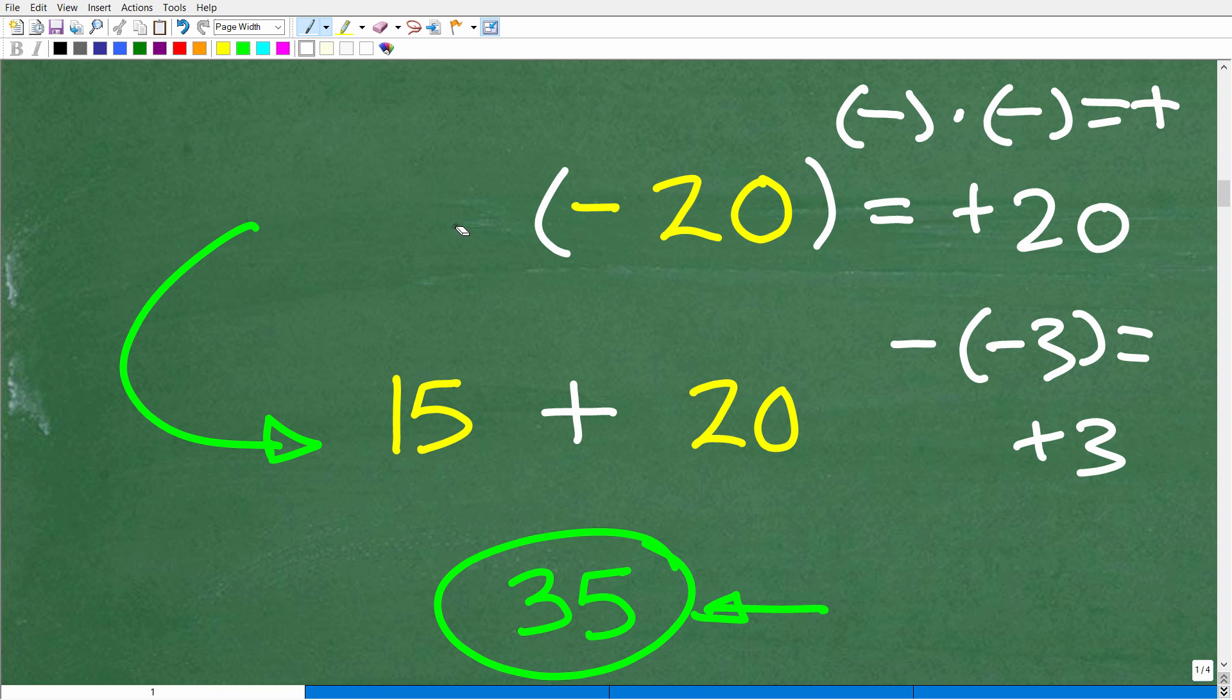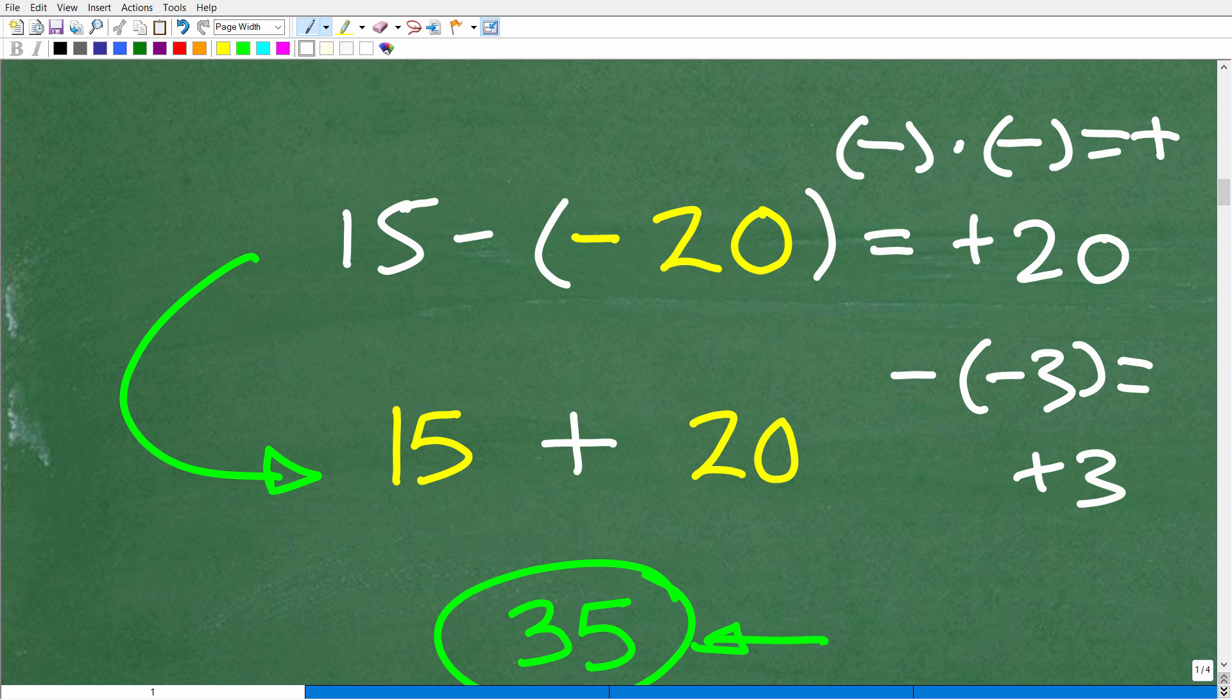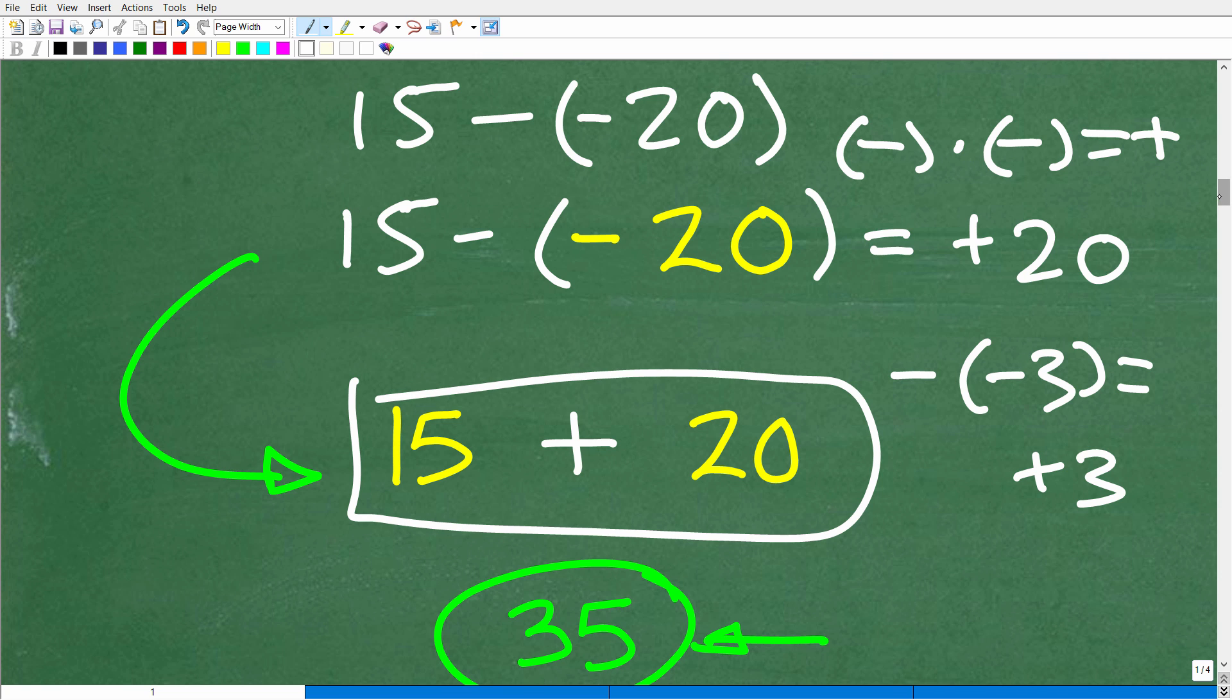So, again, let's go back to our problem. So we have 15 minus minus 20. And I want to stress the point. If you do have a situation with two negatives, so in other words, if you're doing some math work and you come up with 15 minus minus 20, you're not going to write it this way. That can cause a lot of confusion. So break up that second number in parentheses. So, again, pretty simple here. 15 minus minus 20 is the same thing as 15 plus 20, which is 35.